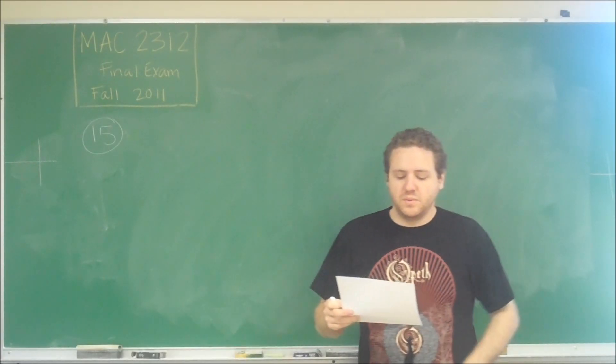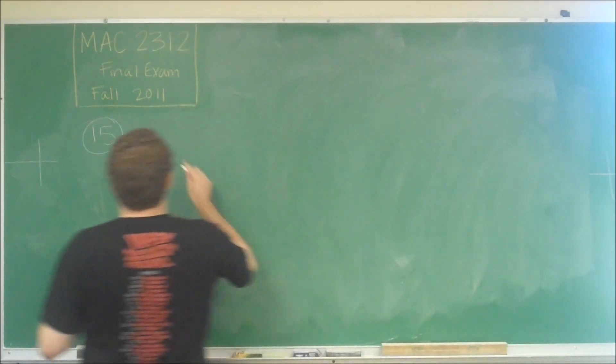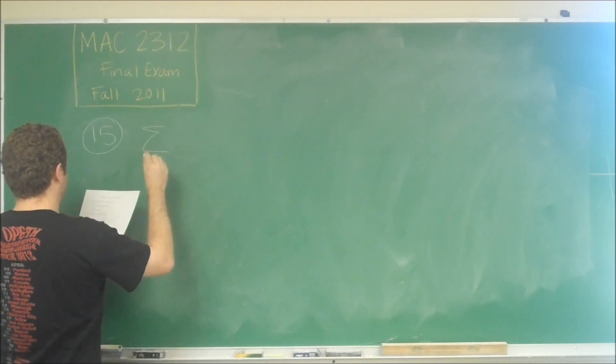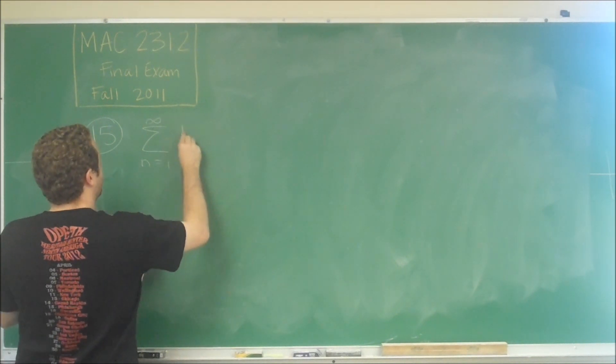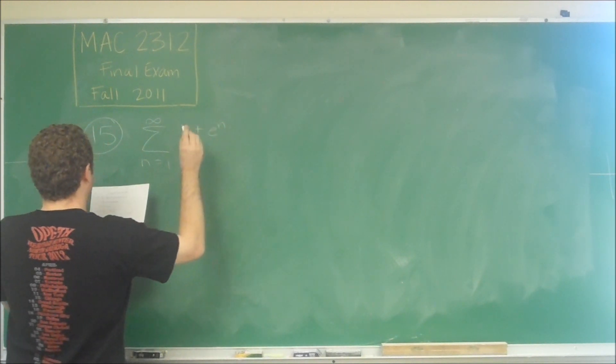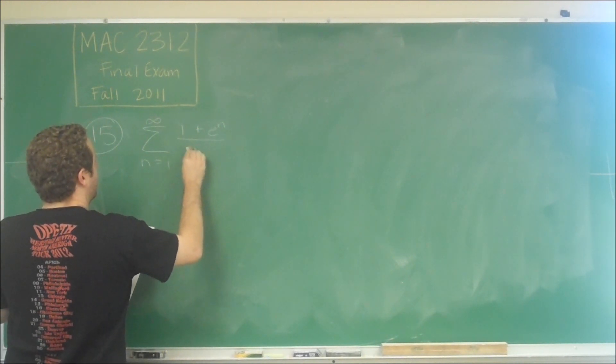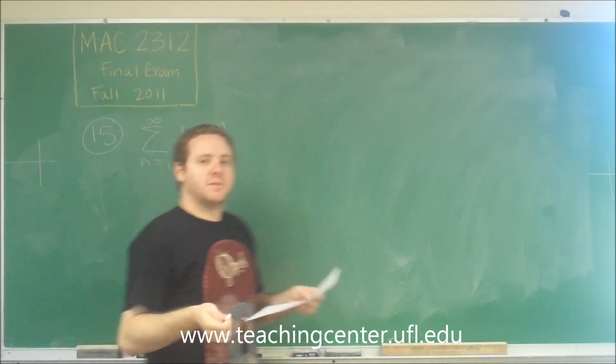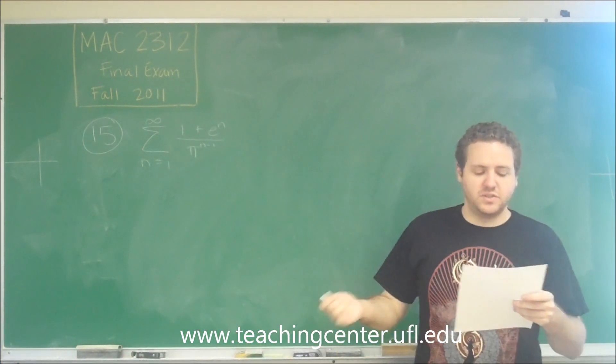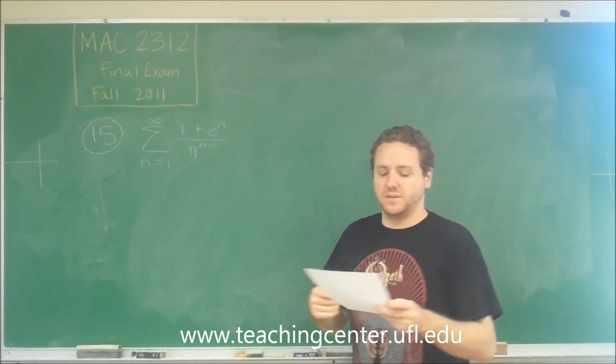Okay, problem 15 is another one of the ones with multiple parts. And we have this sum from n equals 1 to infinity of 1 plus e to the n over pi to the n minus 1. And we have a couple of different statements about it. So it's just called a sub n for the rest of these here.